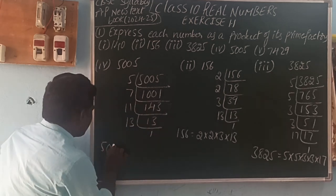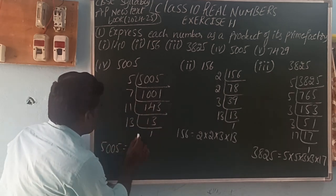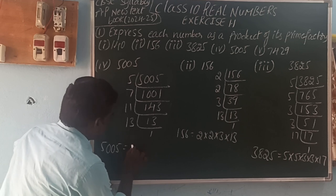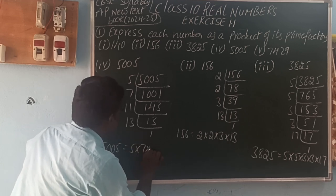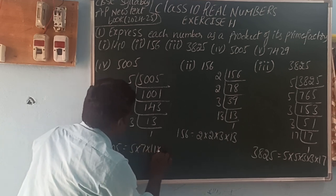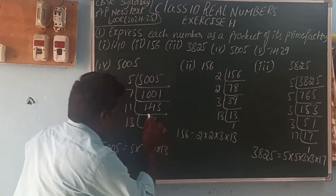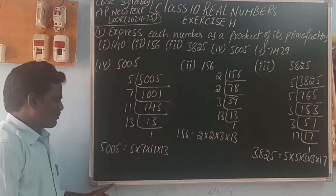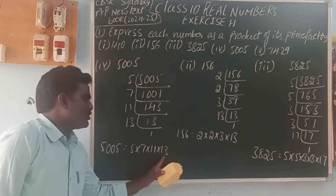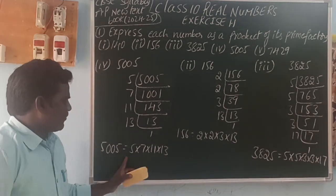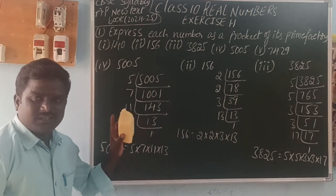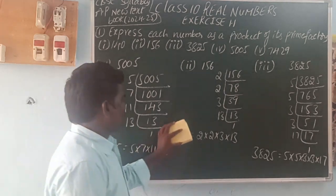The number 5005 can be written as a product of prime factors: 5 × 7 × 11 × 13. So the prime factors of 5005 are 5, 7, 11, and 13.